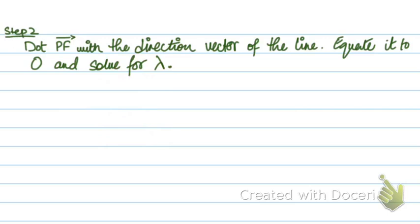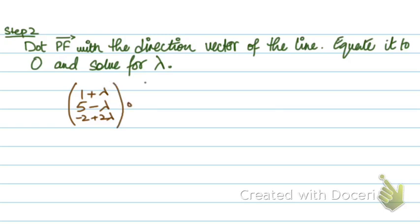The next step is to dot PF with the direction vector of the line. PF is (1 + λ, 5 - λ, -2 + 2λ) and the direction vector is (1, -1, 2). We set this dot product equal to 0, because the line PF creates a 90-degree angle with the line, and when you dot two vectors at 90 degrees the result is always 0.